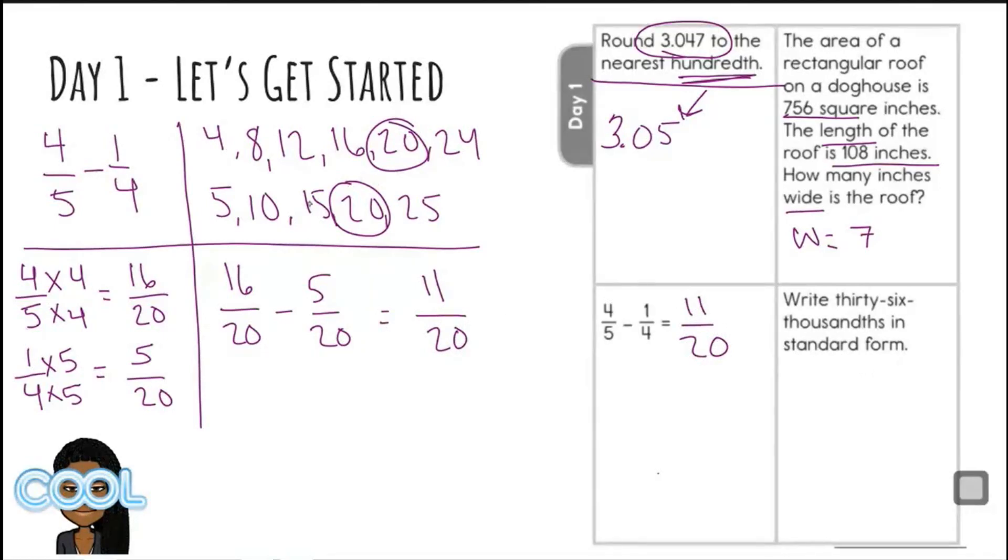Our last problem says to write 36 thousandths in standard form. Well, I see a THS here on the end, so that's telling me that this is a decimal. So I'm going to just write my decimal here. I'm going to write out my spaces behind the decimal. This is my tenths, hundredths, thousandths, because it says 36 thousandths. That six is going to be at the thousandths place, my three and my zero. And that's it for today. Great job. And I will see you tomorrow.